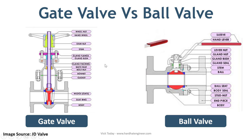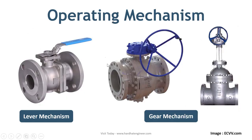Both valves can be operated by a motor or lever. Small and medium-sized ball valves are lever-operated, whereas large-sized ball valves require a gear mechanism with a hand wheel due to the large torque requirement. On the other hand, gate valves are always operated through a hand wheel with or without a gear mechanism, depending on the size of the valve.